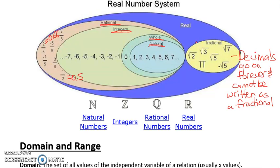So irrational — it breaks our brain. Altogether, these make up the real numbers. They're numbers that we have a physical reality for. Now, there's also something called imaginary numbers, and imaginary numbers are something you're likely to use a little bit in grade 12, but also in university.